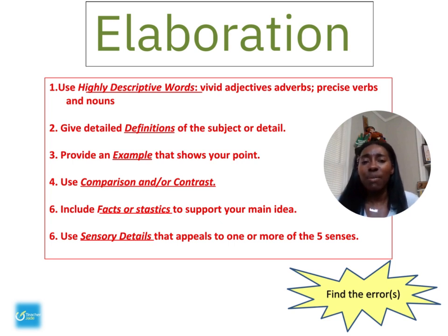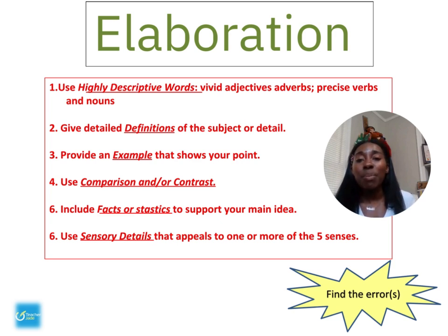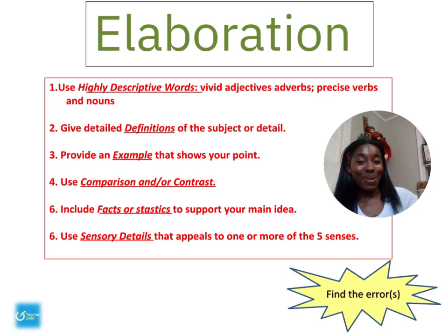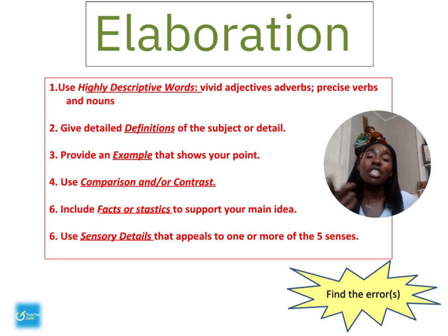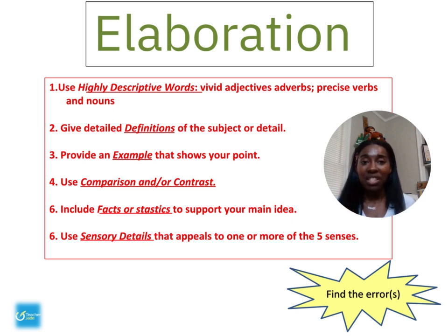In number four, 'comparison and or contrast' should use matching words: compare and contrast, with either 'and' or 'or,' not both. On the list, the numbering jumps from four to six, six — wrong number. Statistics is spelled wrong in what's labeled number six but is really number five. Number six uses wrong subject-verb agreement: 'sensory details that appeals' should be 'appeal.' The number five is spelled out in word form when it should be a numeral. And at the bottom, the S in parentheses for 'errors' shouldn't be there, and punctuation is missing. A whole lot of errors — which is why it's important to reread and revise your work.